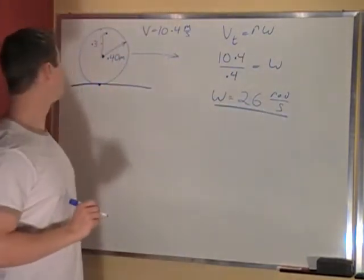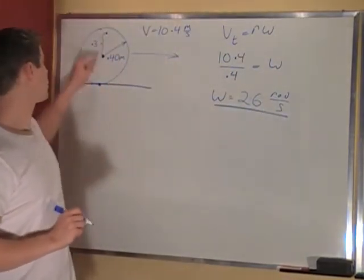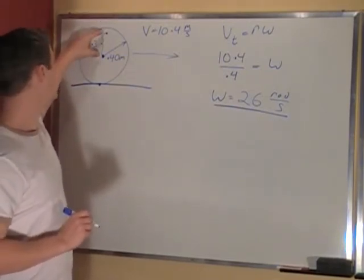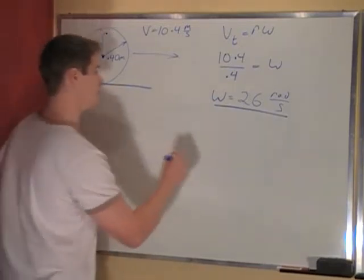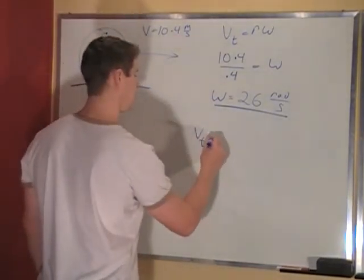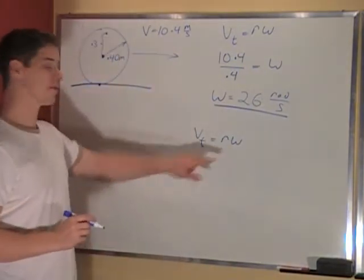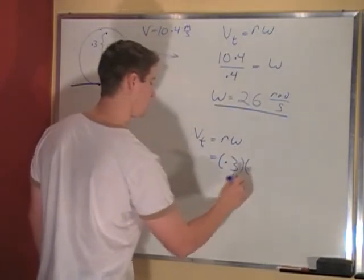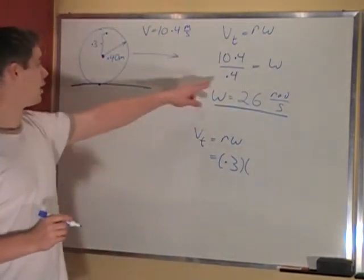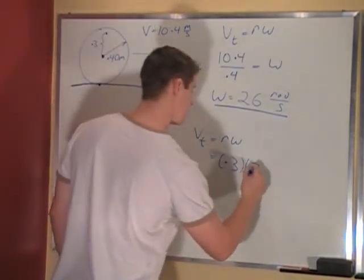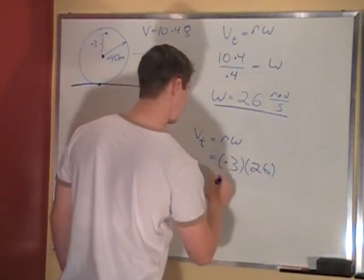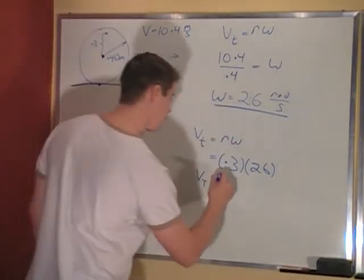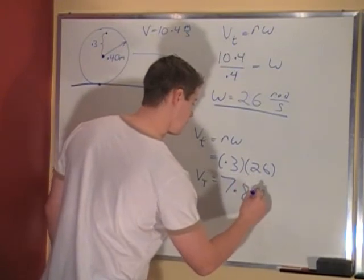For the second part of the problem, what is the tangential velocity at a point 0.1 meters away from the edge? So our radius of this point is going to be 0.3 meters. We do the exact same thing: v_t equals r omega, using a radius of 0.3 meters and an omega of 26 radians per second. Plugging these in, we get an answer of 7.8 meters per second.